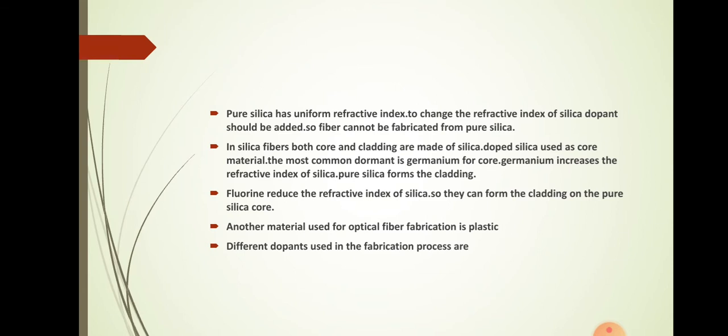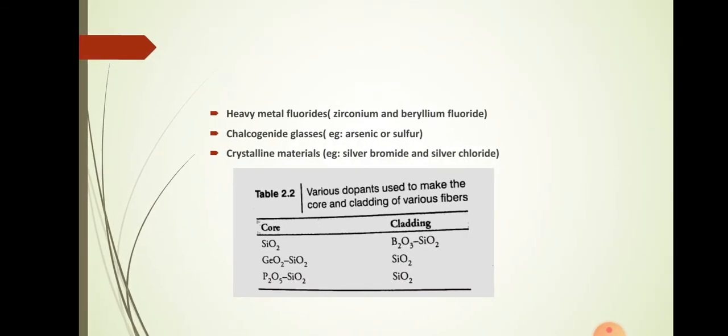There are other dopants such as fluorine that reduce the refractive index of silica, so they can form the cladding on a pure silica core. If we are using pure silica as the core, then the cladding should have a refractive index less than that of pure silica, so we add fluorine to pure silica to make the cladding. Another material used for optical fiber fabrication is plastic. Different dopants are used in the fabrication process, and plastic fibers undergo large attenuation, so they are mainly used for short distance communication.